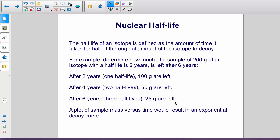For example, let's determine how much of a sample of 200 grams of an isotope with a half-life of two years is left after six years. Each two years, half of what's left of the isotope decays into something else. So, after two years, half of the initial 200 grams are left, that is 100 grams.